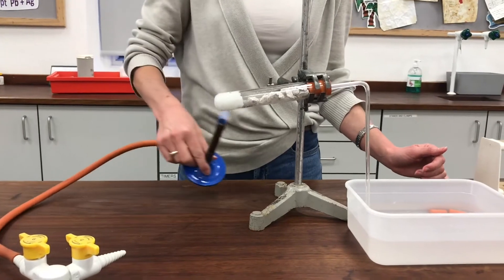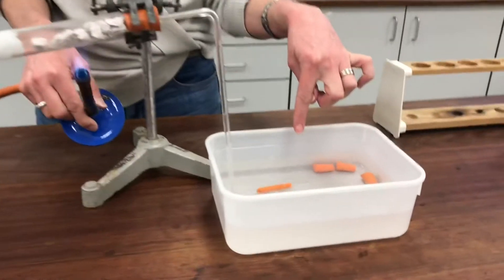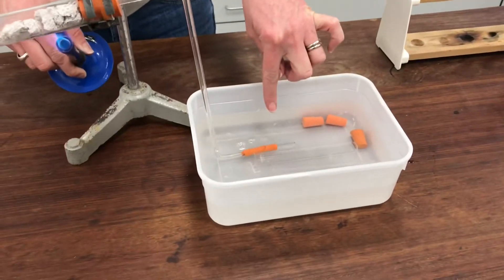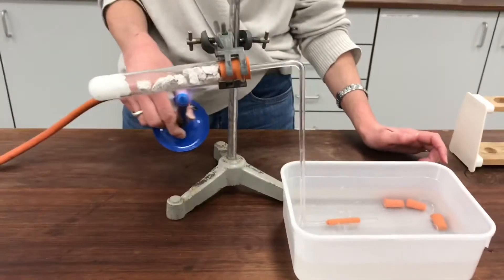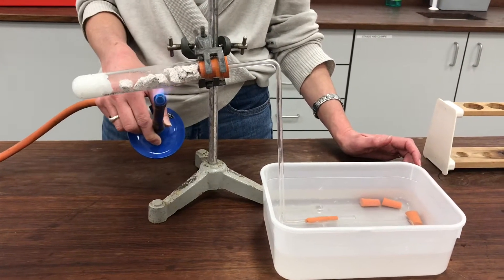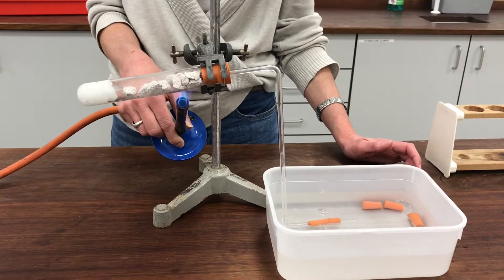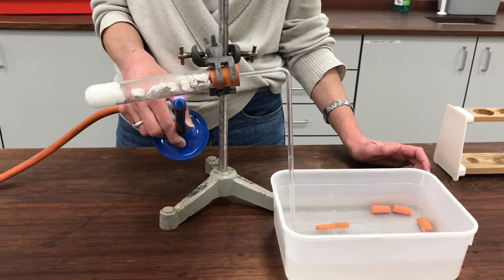The first job is to heat the catalyst. Now as I heat the catalyst you'll be able to see there's some bubbles coming out of the end of the tube. Now those bubbles are just air that's expanded from the apparatus as I've been heating it. So I don't want to collect those just yet. I'm just going to heat the catalyst for a little while until I think it's nice and hot.